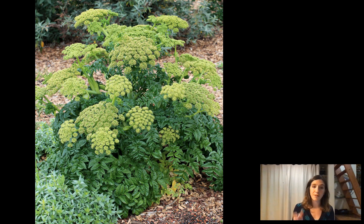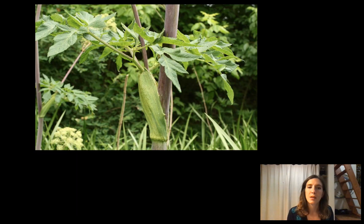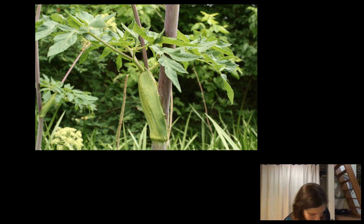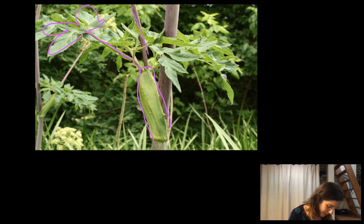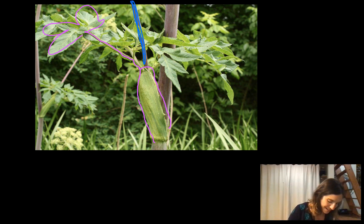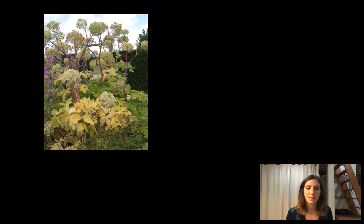Vegetatively, this family is going to have compound leaves — at least deeply, deeply dissected, usually. They also have this very distinctive sheathing leaf base. The entire base of the leaf attaches to the stem in a very broad way, almost wrapping around it. A new stem can shoot out as an axillary bud from behind that sheathing leaf base. So: sheathing leaf base, compound leaves, compound umbels.